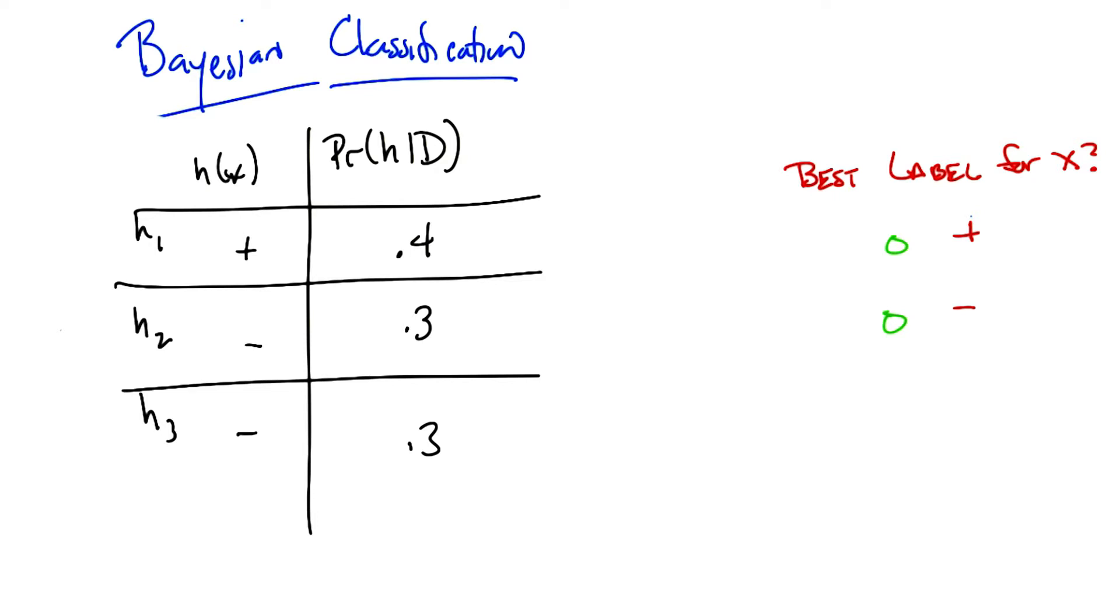But if we're saying, what's the most likely label? The most likely label is, we have to actually look over all the hypotheses and, in a sense, let them vote. And so the probability that the label is minus is actually 0.6, which is greater than 0.4. So if I had to pick, I would go with minus.